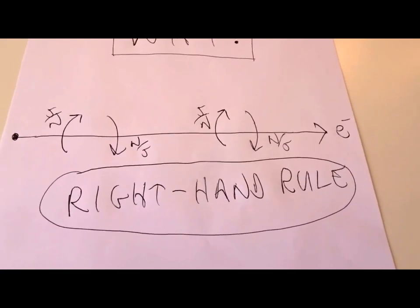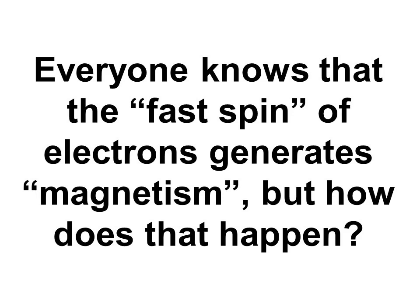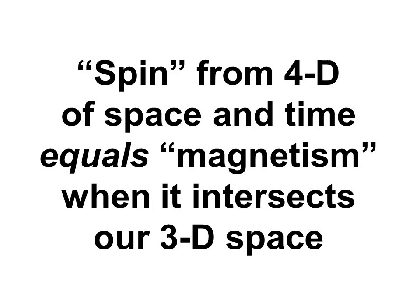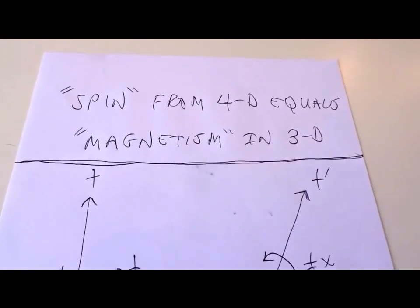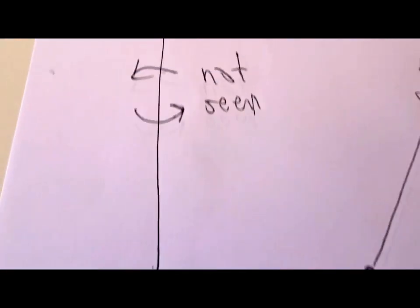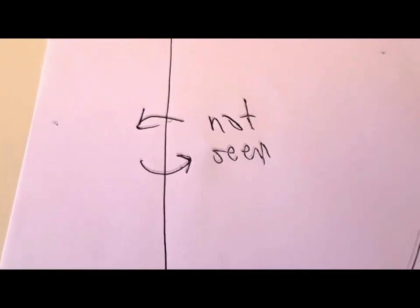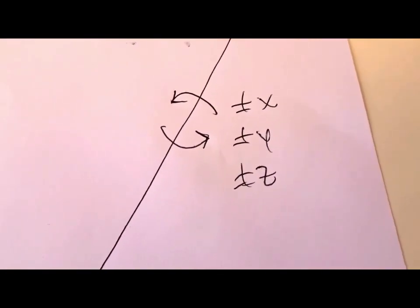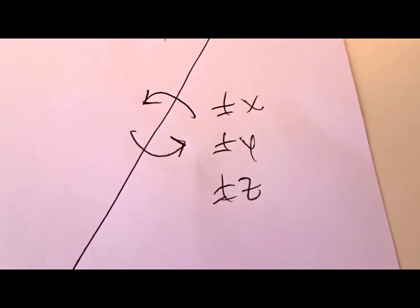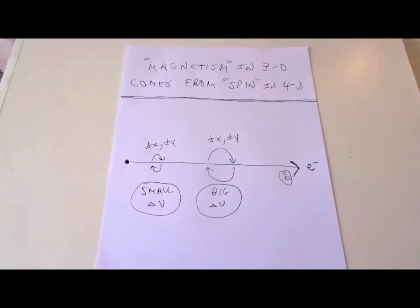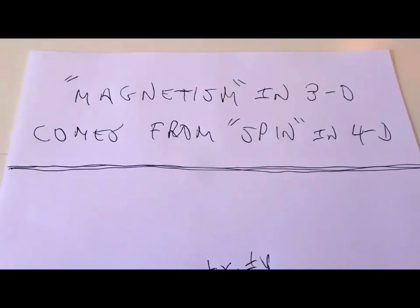Now we'll explain why, and you'll never forget. The reason why all of these things are happening is that spin in four dimensions equals magnetism in three dimensions. If we have a stationary object with delta v equals zero moving forward through time t, there's a spin motion, but we can't see it because it's moving forward through time. Then if that object picks up a big delta v to move sideways with a different time t, like in special relativity, the spin motion shows up as plus or minus x, plus or minus y, plus or minus z motions in three dimensions. Magnetism in three dimensions comes from spin in four dimensions.